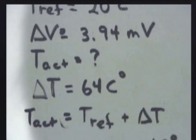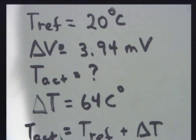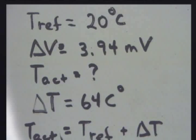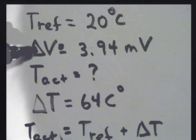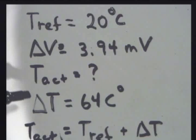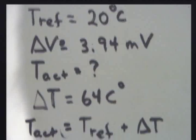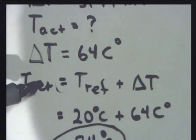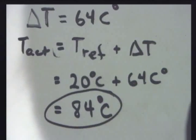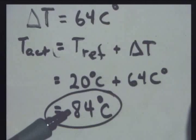Let me go through that one more time. Reference temperature of 20 degrees Celsius. Voltage difference measured of 3.94 millivolts. I want to know the actual temperature. I look up this value in the thermocouple chart. I find 3.94 millivolts corresponds to a temperature difference of 64 Celsius degrees. The actual temperature is the reference temperature plus the temperature difference, which is 20 degrees Celsius plus 64 Celsius degrees, gives me an actual temperature of 84 degrees Celsius.